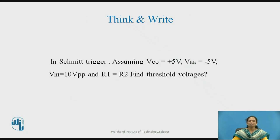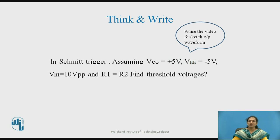In the Schmitt Trigger circuit, assume VCC = +5 V and VEE = −5 V. Vin varies between ±10 V peak-to-peak, and R1 and R2 values are equal. Find the threshold voltage values and draw the output waveforms for the given condition.